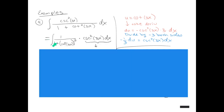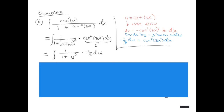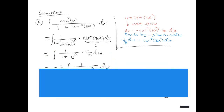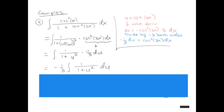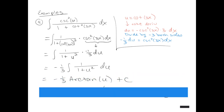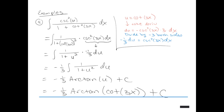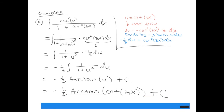Using algebra to rearrange, we move csc²(3x) to multiply times dx, leaving 1 in the numerator. Now substituting: cotangent becomes u in the denominator, giving 1/(1 + u²), and csc²(3x) dx = −(1/3) du. This is a completely reasonable problem — pull −1/3 out front, and taking the antiderivative gives arctan(u). Putting x's back in: −(1/3) arctan(cot(3x)) + c. That's the solution.